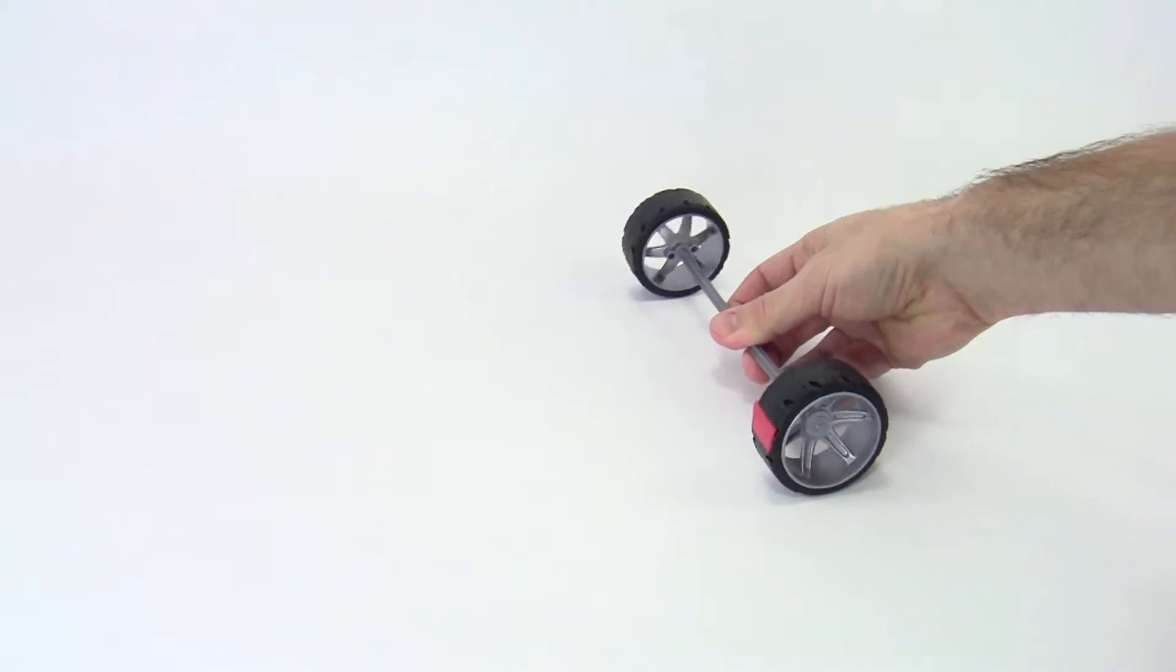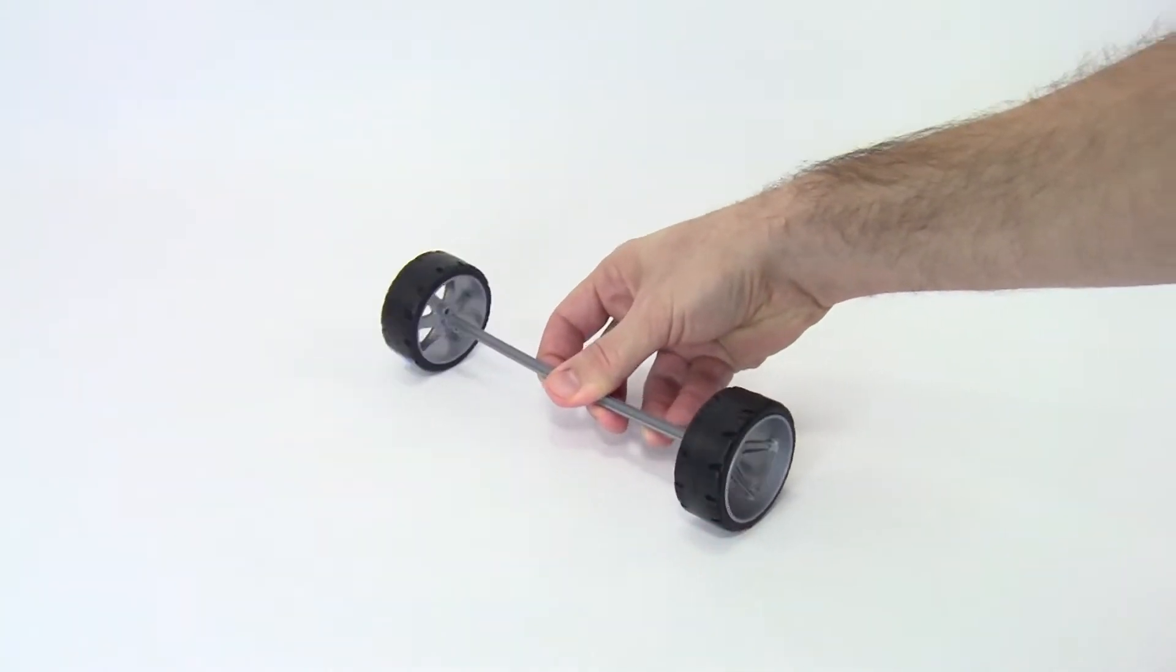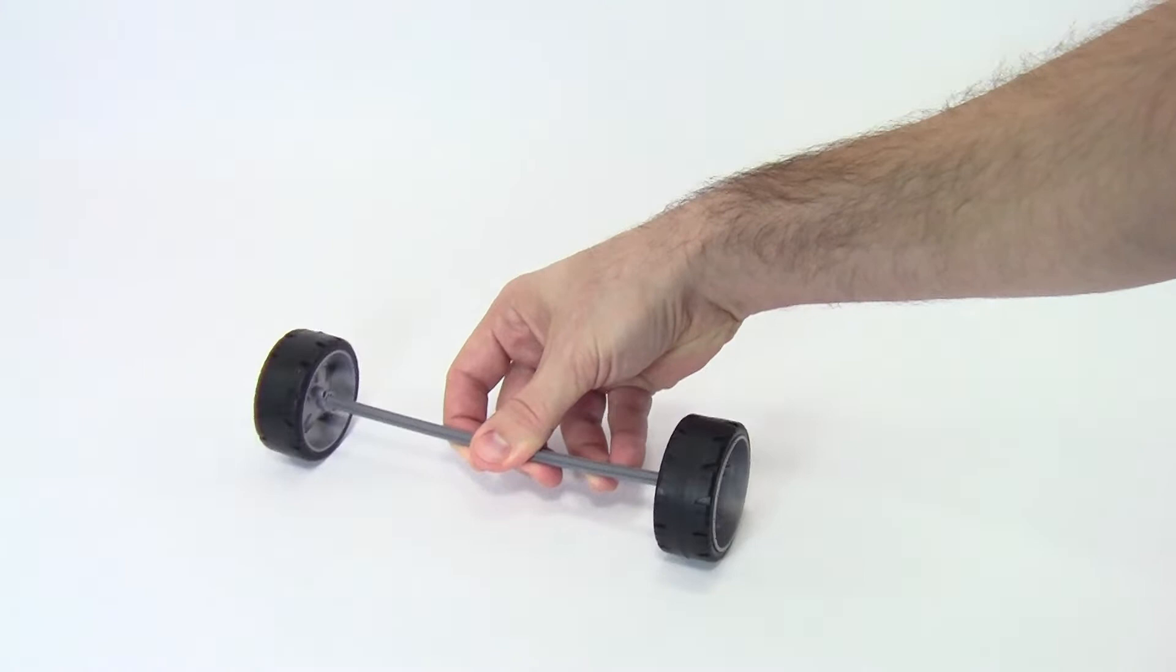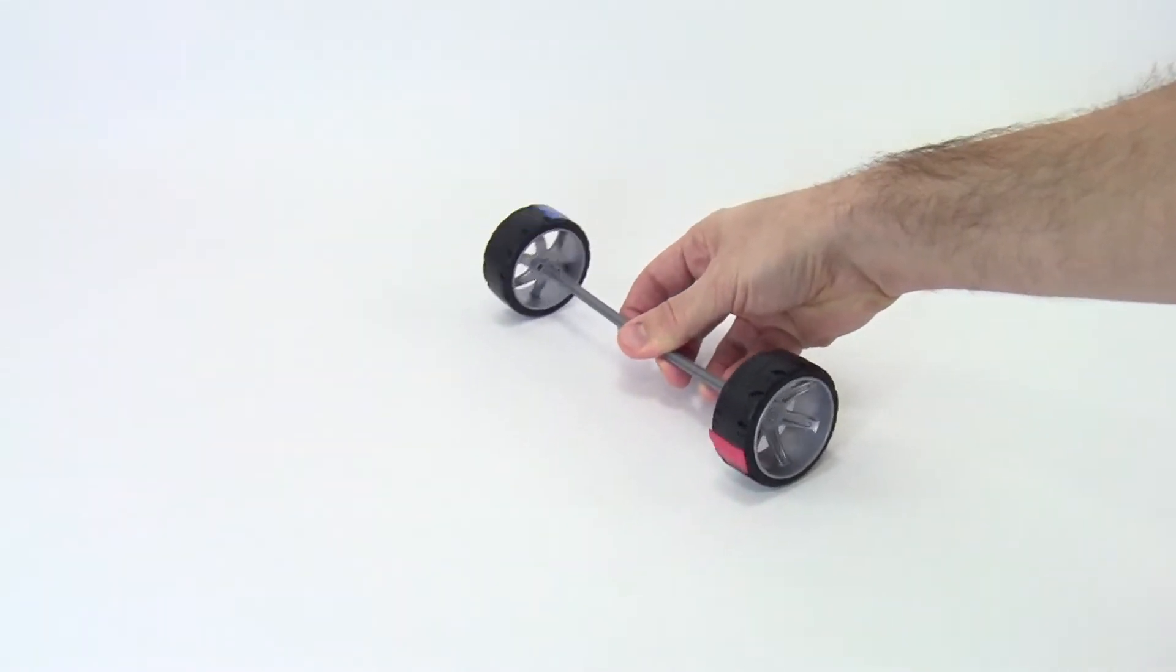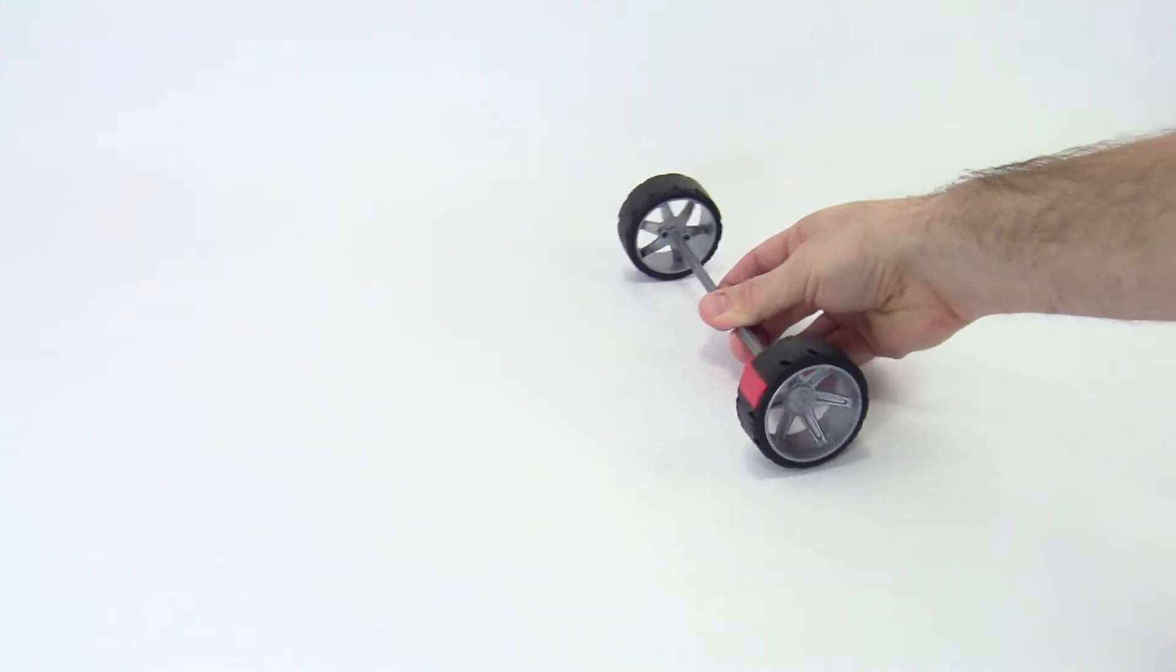When the axle goes around a turn, the outer wheel must cover a greater distance in the same amount of time as the inner wheel. This means that it must rotate faster. Again, you can see that here by closely watching the red and blue pieces of tape.